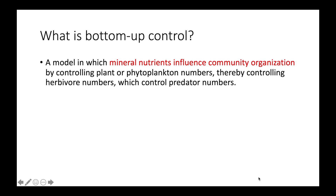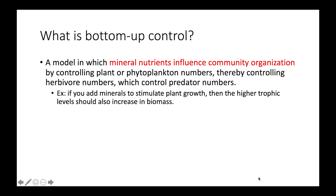The minerals available influence how many plants or phytoplankton can survive, which determines how many organisms at each trophic level above can also survive. For example, if you added minerals to stimulate plant growth, you would have higher trophic levels increasing in biomass as well, because the extra minerals would cause extra plants to grow, allowing you to support more herbivores.